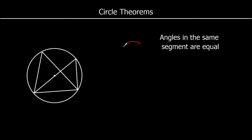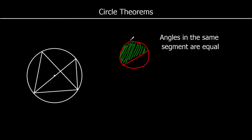If we have a circle and a straight line drawn in it — which is a chord — we can say we've got a segment. A chord splits the circle into two segments. In this theorem, we're looking at angles made from two points on the chord, and any angles made from those two points, as long as they're in the same segment, are going to be equal.